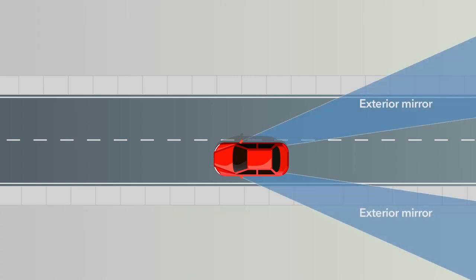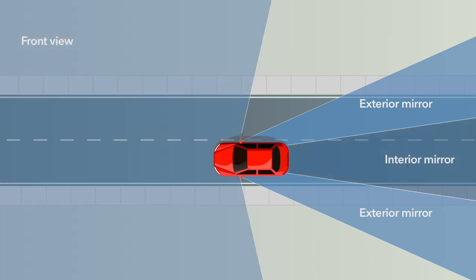These are the areas that can be seen through your side view mirrors, rear view mirror and looking forward. Blind spots are the areas around the vehicle that cannot be seen either looking forward or using the vehicle's mirrors.